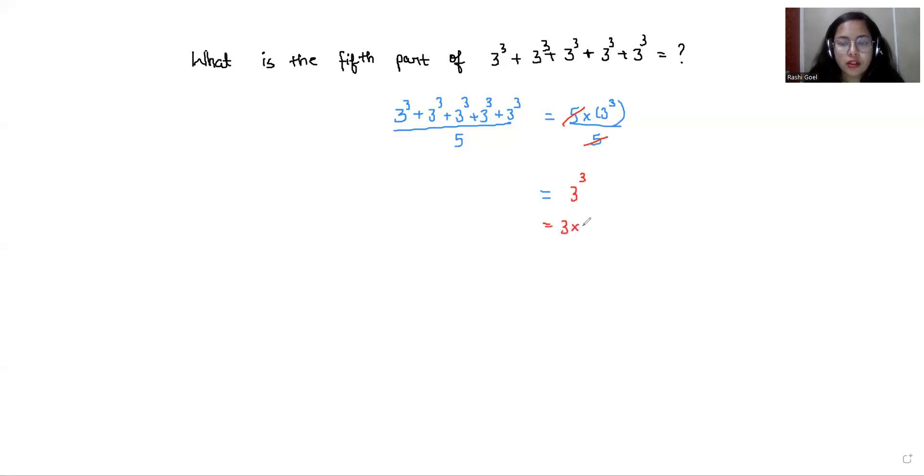3 power 3 I can write as 3 times 3 times 3 and 3 times 3 times 3 is 27. So what is the fifth part of this equation? 27 is the fifth part.